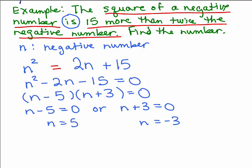Okay, first of all, we're looking for a negative number. So 5 can't be what we're looking for, because that's not even negative.